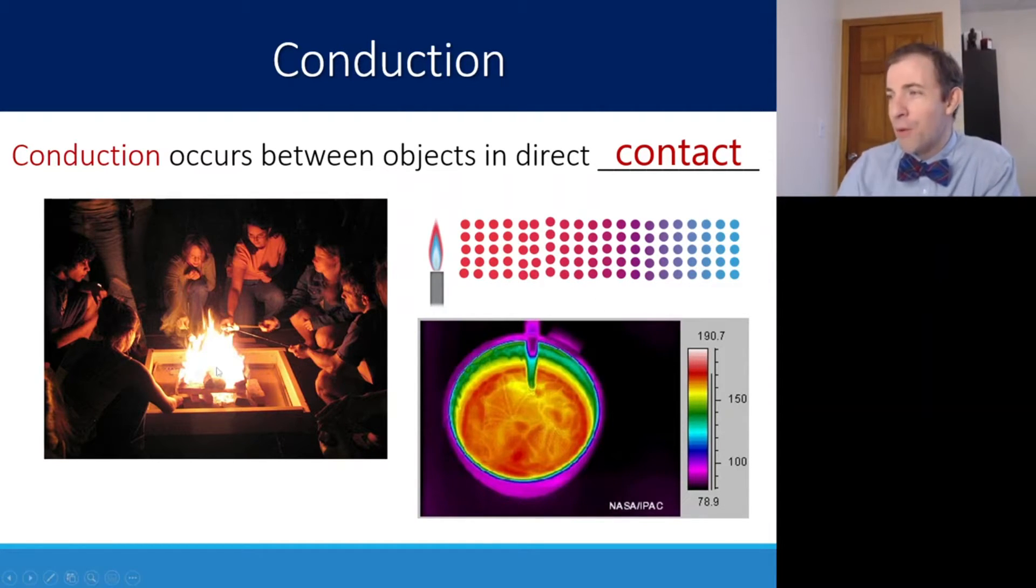So if you're roasting marshmallows, the marshmallow stick, if you're far enough away, you're usually fine. But if you were to grab like halfway up, you're going to notice that it's hotter halfway than it is all the way at the handle because the heat is making its way down through the process of conduction.